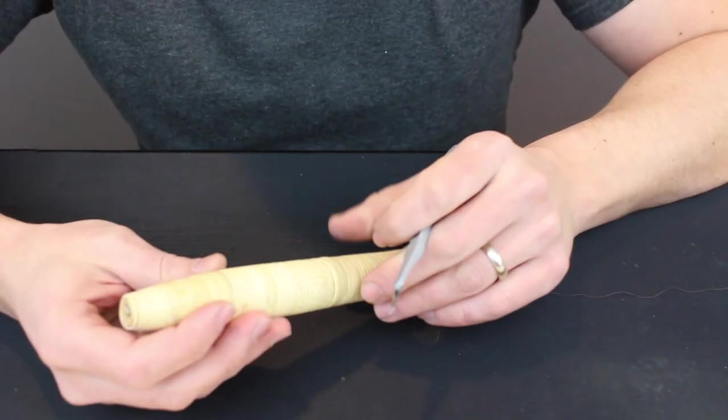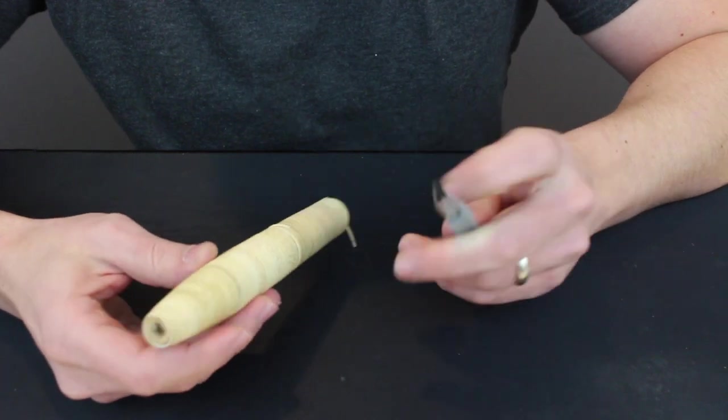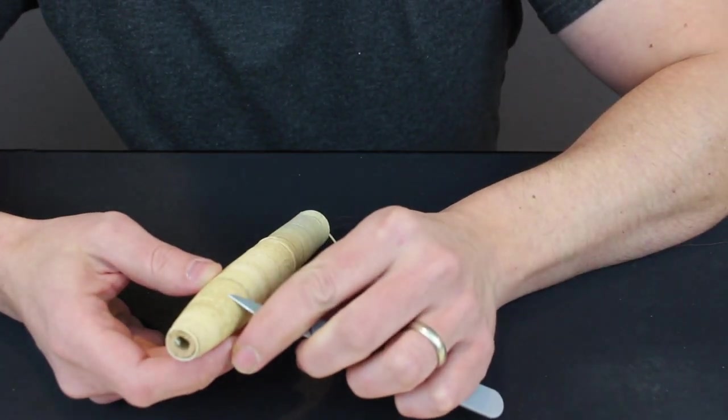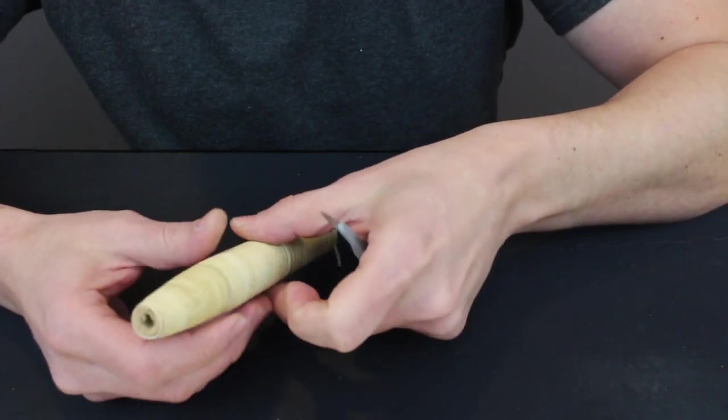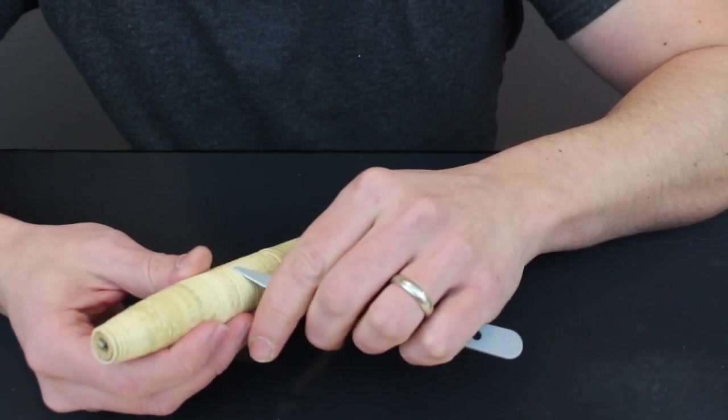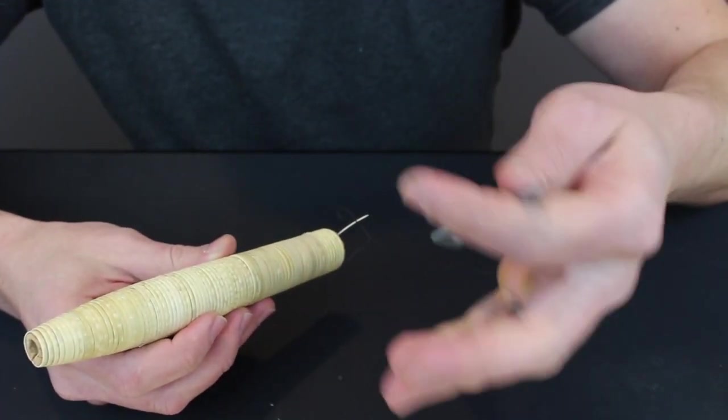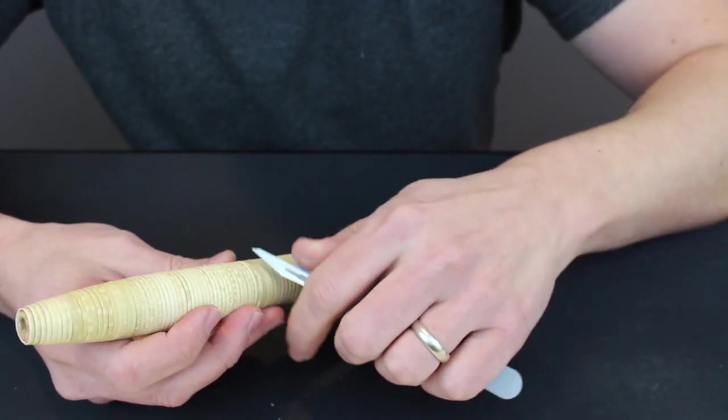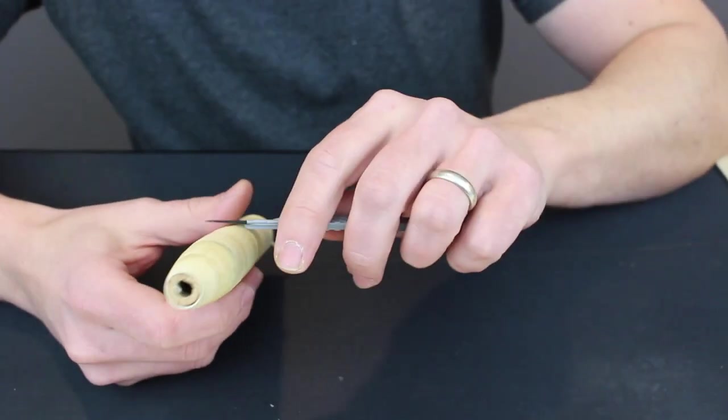Before we get to the silk and varnish, turn the grip in your hand and if you see any small hairs sticking up or little frayed pieces of rattan, take a scalpel or razor blade and cut those off. They'll just get stuck in the varnish and make the finished product not look quite as nice.